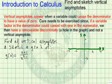Let's continue our discussion of limits and continuity by looking at vertical asymptotes. We want to both find them and sketch them.